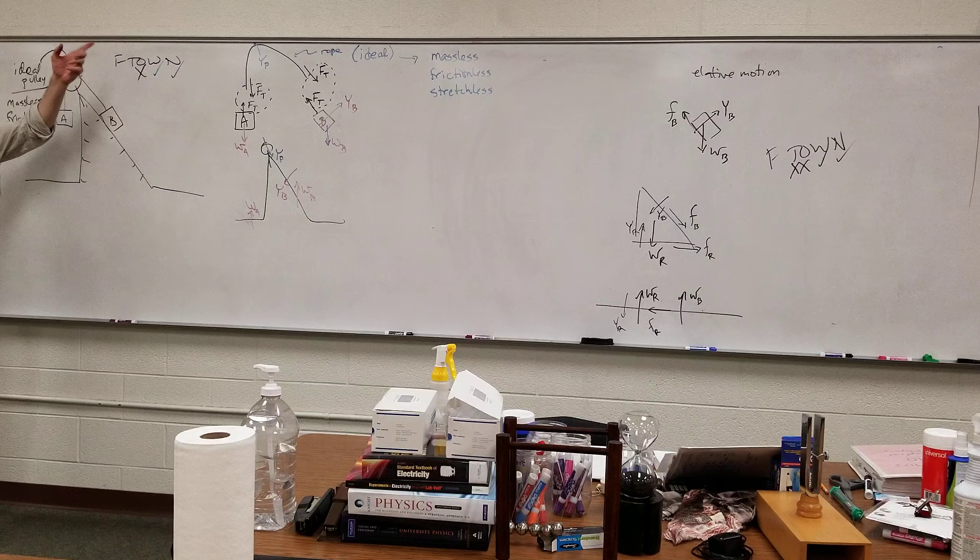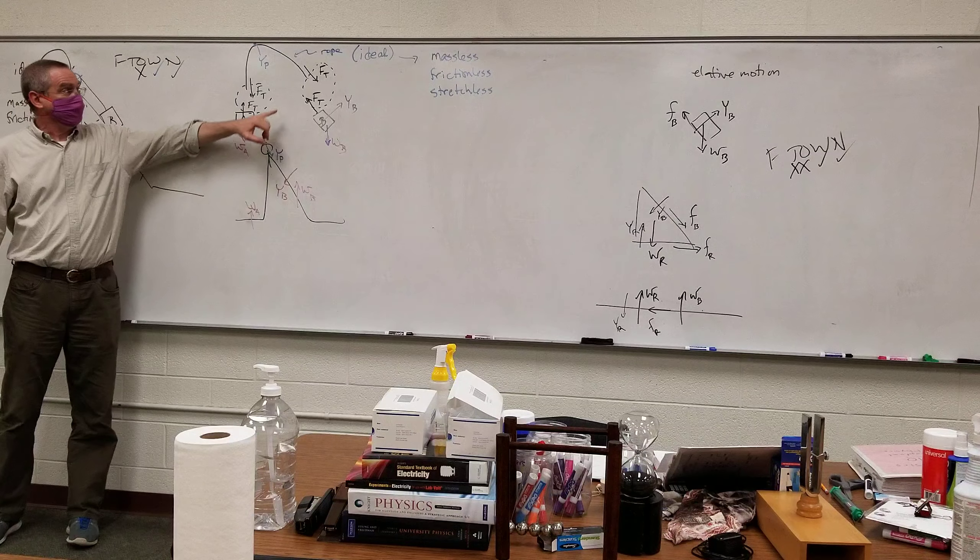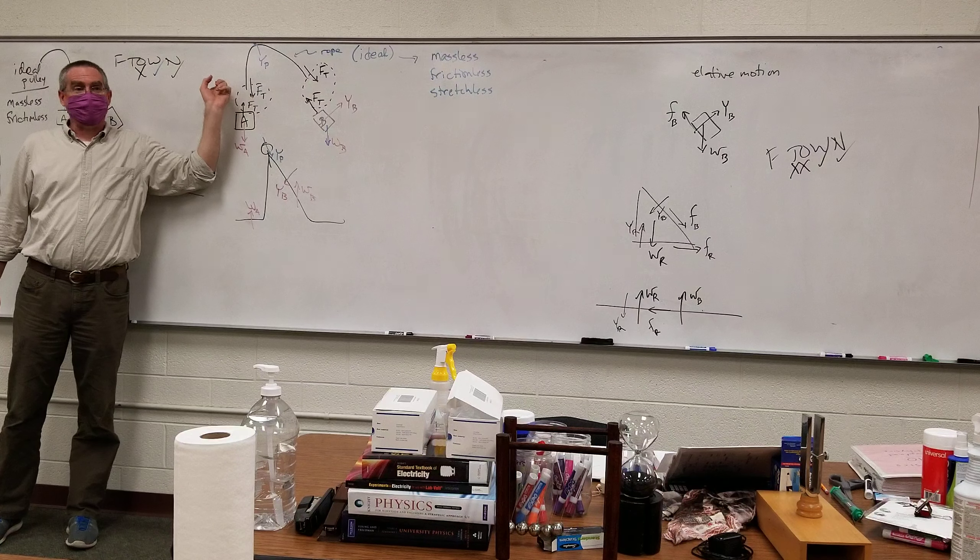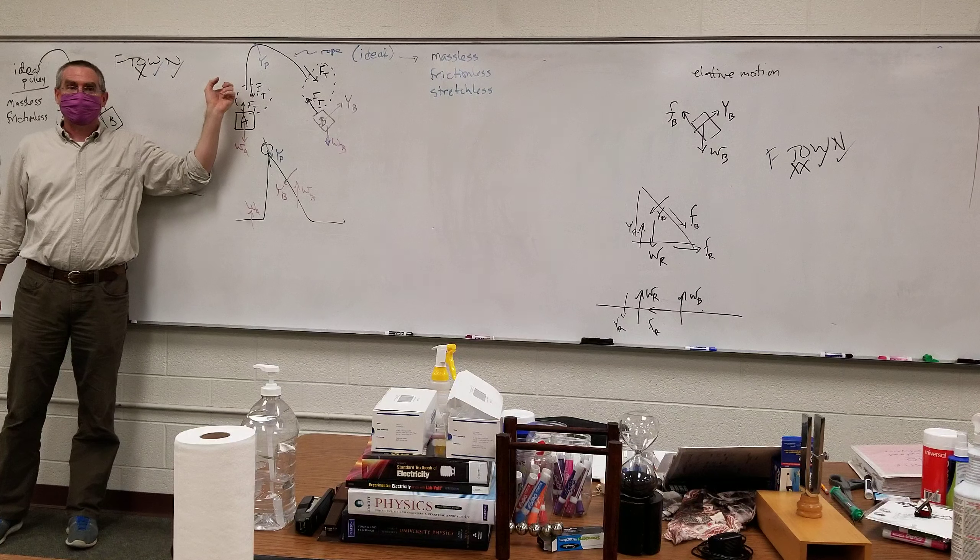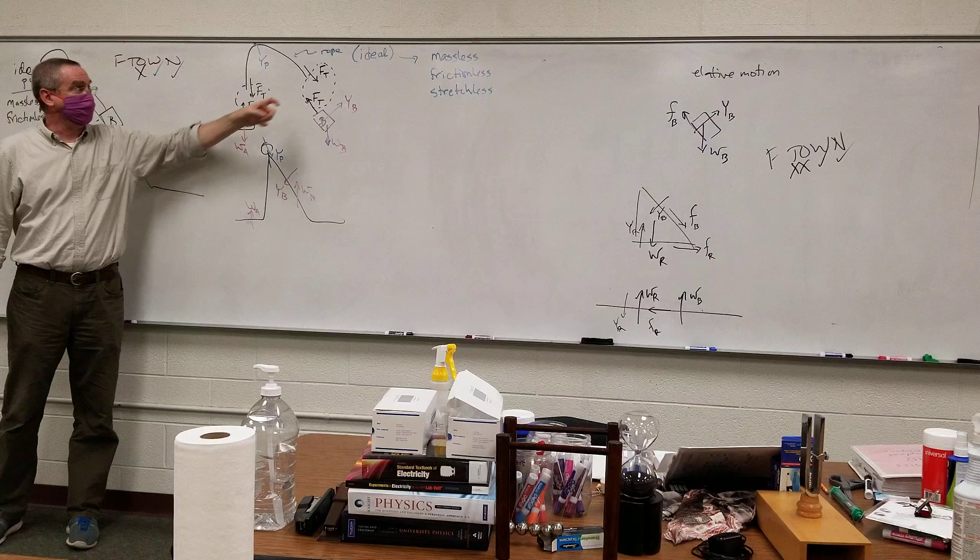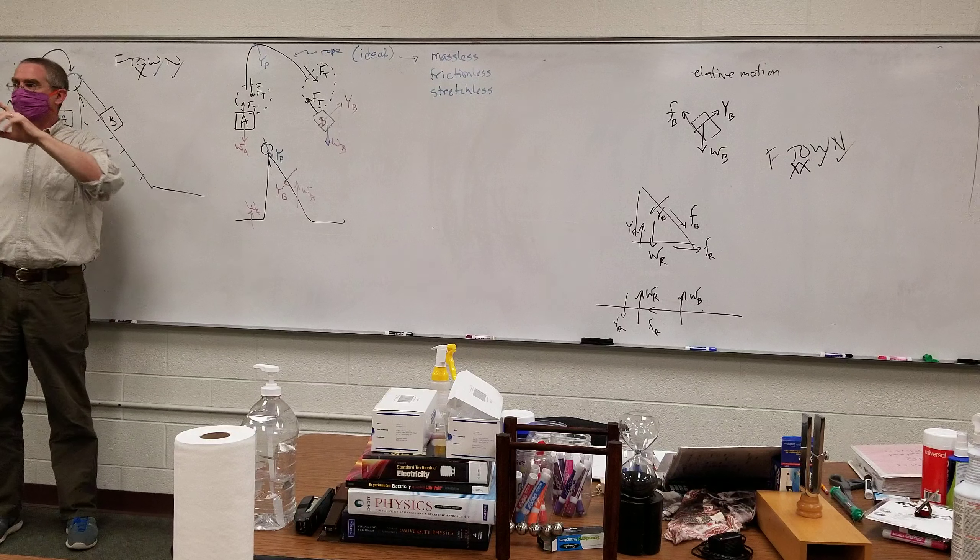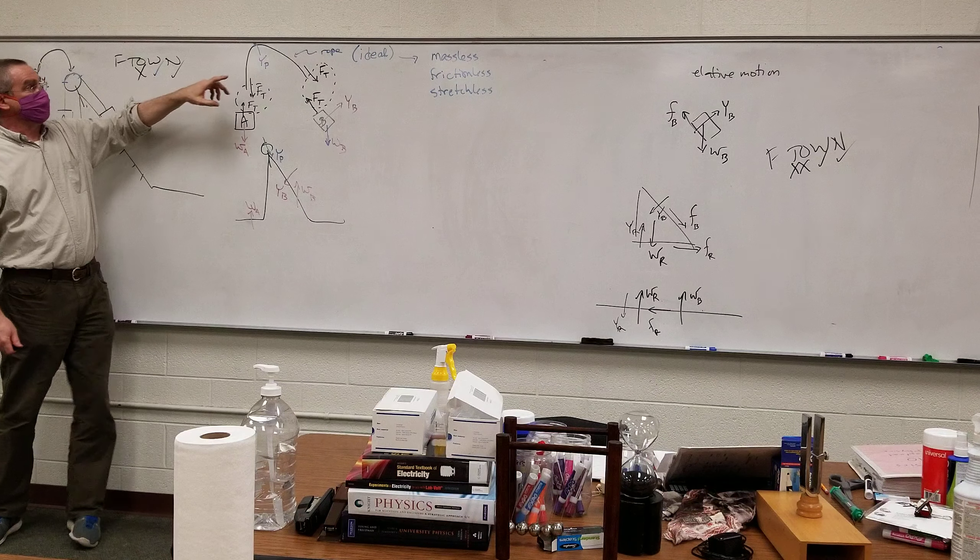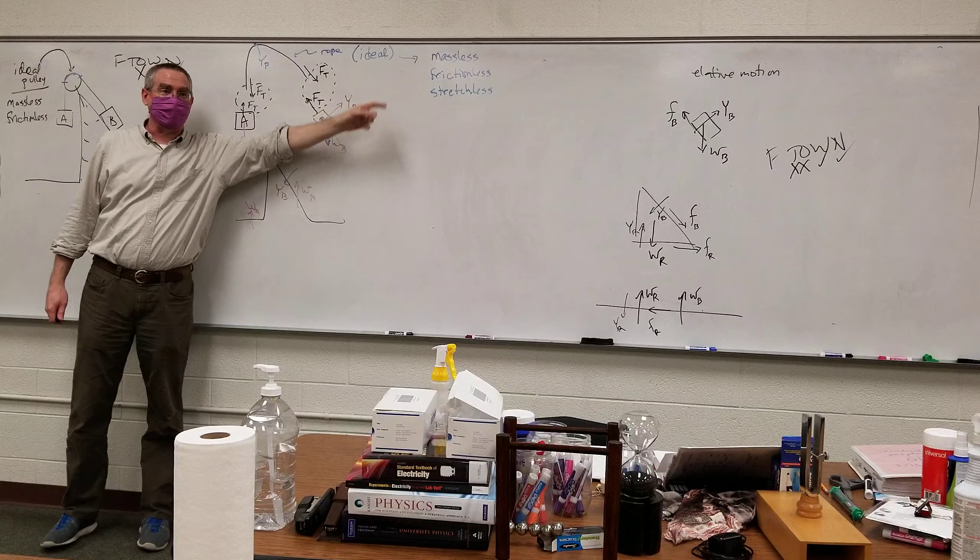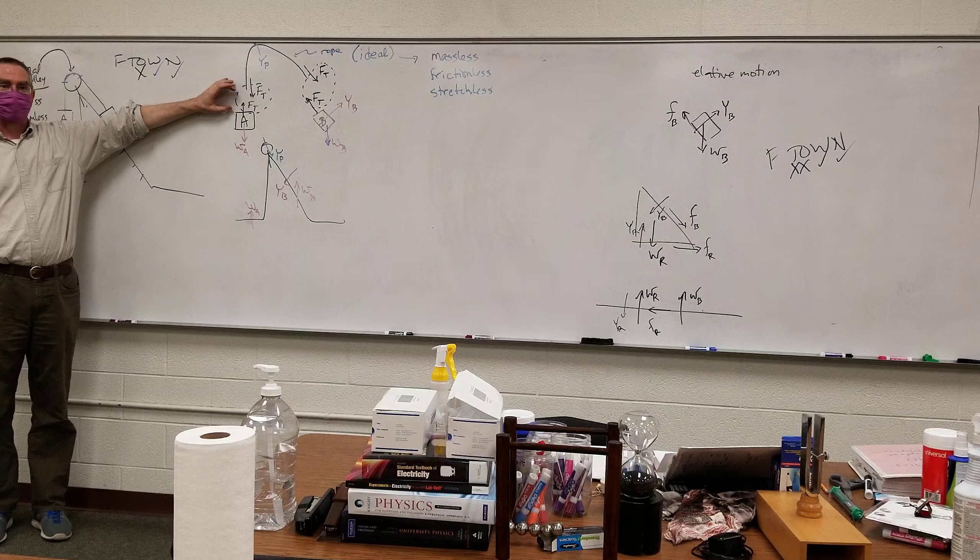And here's the reason for the ideal. With an ideal rope, the tension at each end happens to be the same magnitude. So, I can get away, if I have a single rope, I don't need subscripts. If I have two ropes, then I need subscripts. If we take away some of the ideal nature of it, if we add friction, we add mass, then these would have a subscript, and these two would have a different subscript.